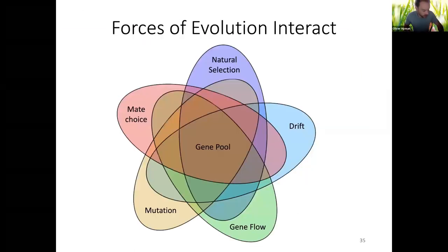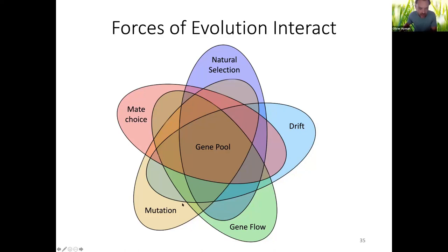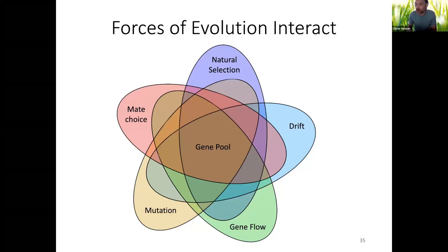To wrap up: none of these forces are happening independently to a gene pool. Natural selection, drift, mate choice, mutation, and gene flow are all happening to natural populations simultaneously, all affecting allelic and genotypic frequencies. To say a population is in Hardy-Weinberg equilibrium with all assumptions met is very, very rare in real populations. But Hardy-Weinberg tells us what a population would look like if none of these things were happening. If the allele and genotypic frequencies are not meeting Hardy-Weinberg assumptions, then one or several of these five forces may be going on.